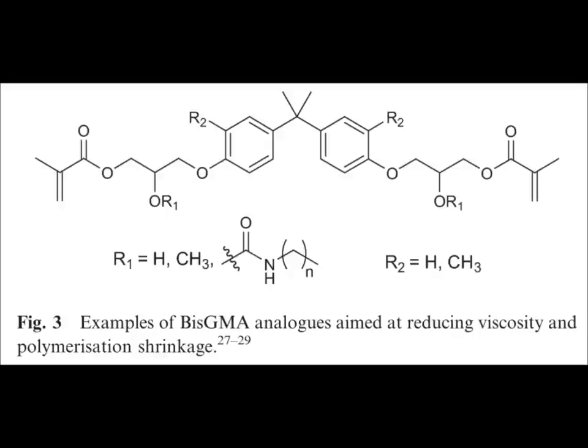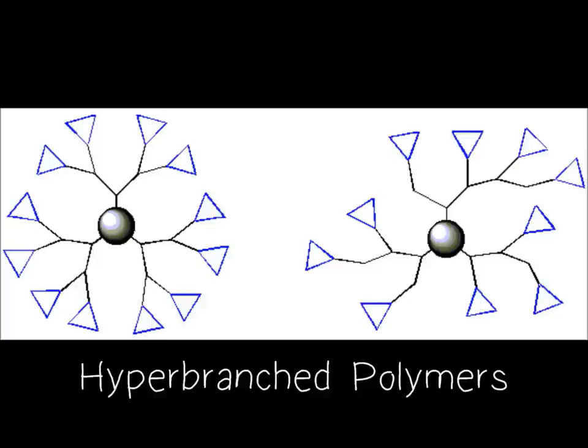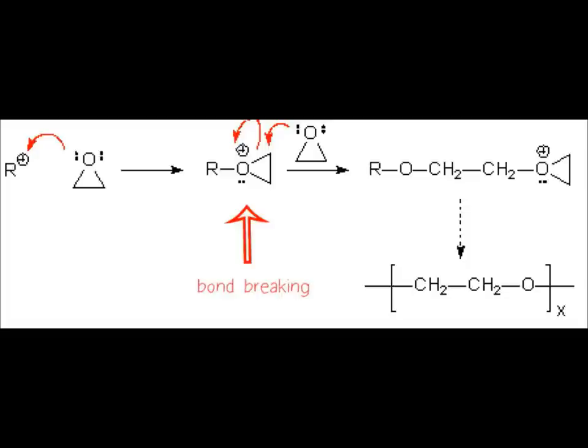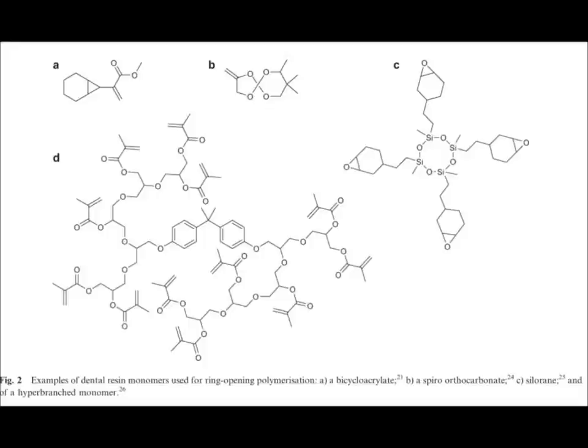Some solutions have been suggested to address these problems. First, modification of BisGMA can solve the toxicity problem — the hydroxyl group is replaced with urethane or methoxy substituents to avoid the hydrogen bonding that increases viscosity. Second, hyperbranched polymers have been used as a solution to shrinkage and viscosity problems, since they have low viscosity, low shrinkage, and good mechanical strength. Third, the use of ring-opening polymerization reduces shrinkage because bond breaking is required for every new bond formation. New monomers have been proposed to support ring-opening polymerization, though one concern is increased water uptake, which limits the long-term strength of the composite.